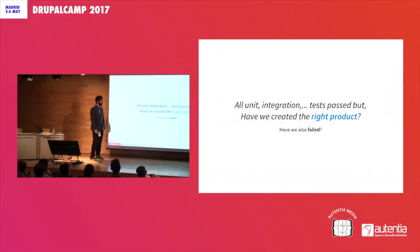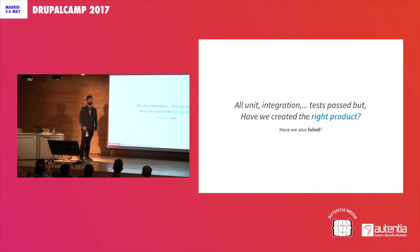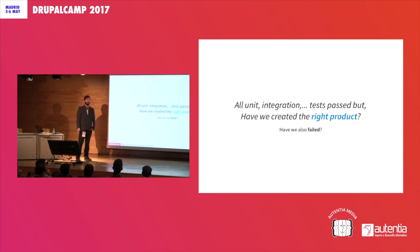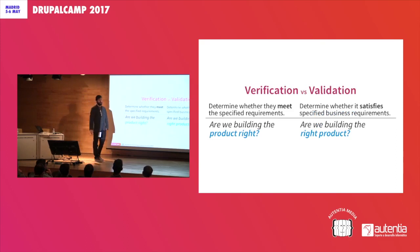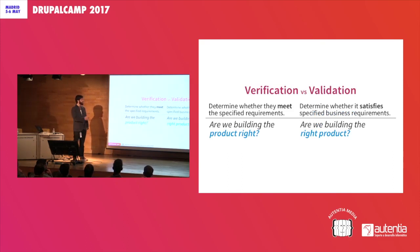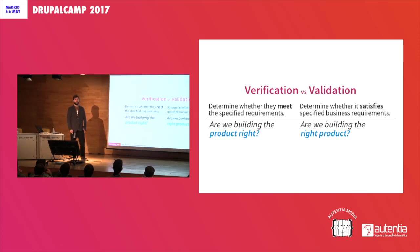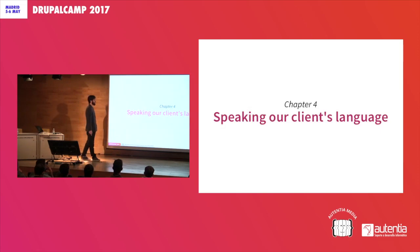But there is a problem. Maybe we have all unit tests, all integration tests, some functional tests. But have we created the right product? Maybe we've created the product as per the specification, but we need to create good products. This is the main difference between verification and validation. With verification, we are checking if the product is right. With validation, we are checking if we have built the right product — which is the most important thing. And it's impossible to build the right product without the knowledge of the client.